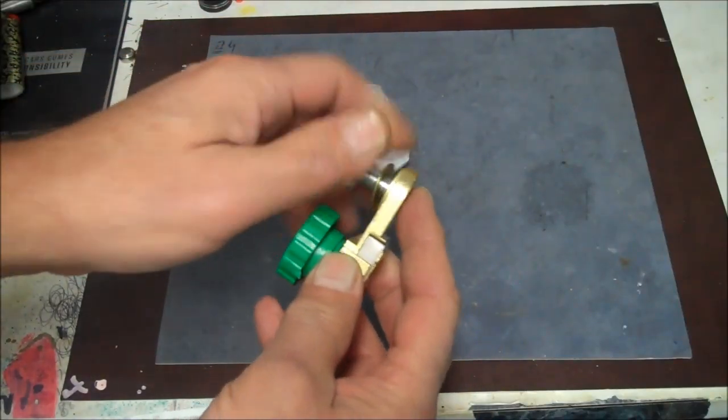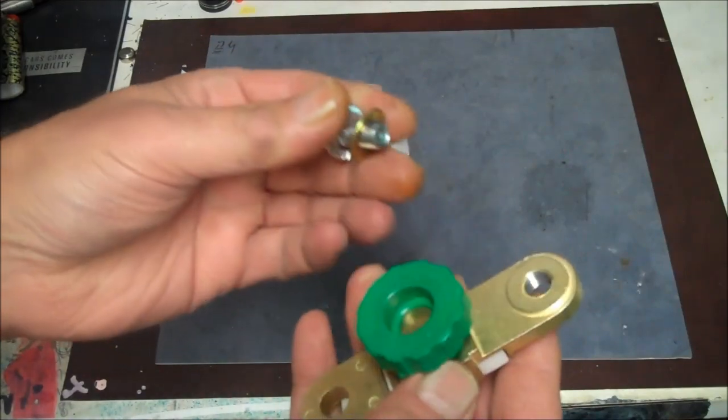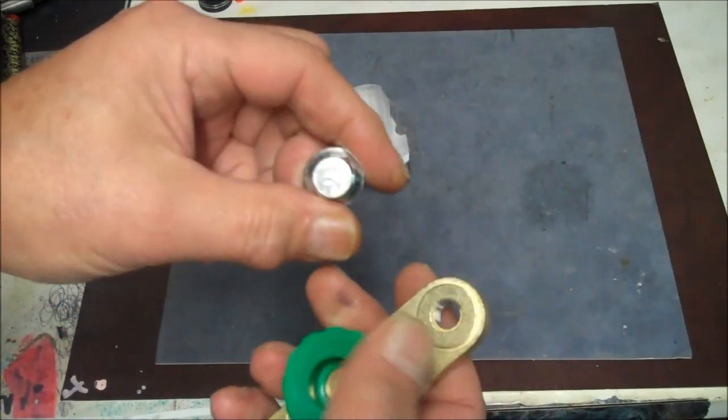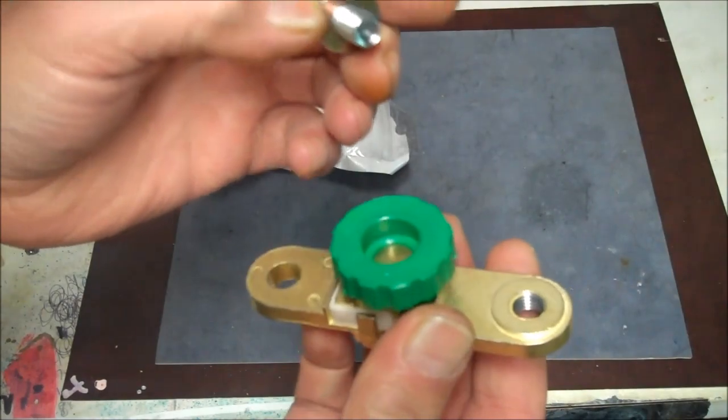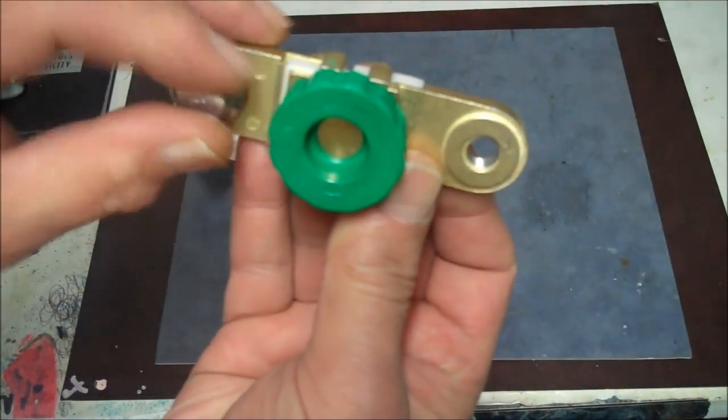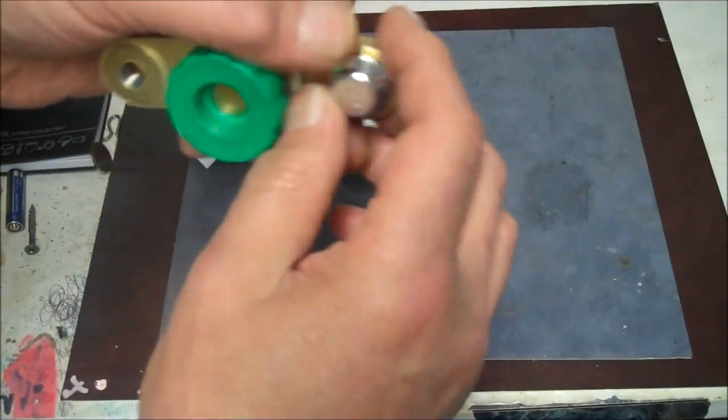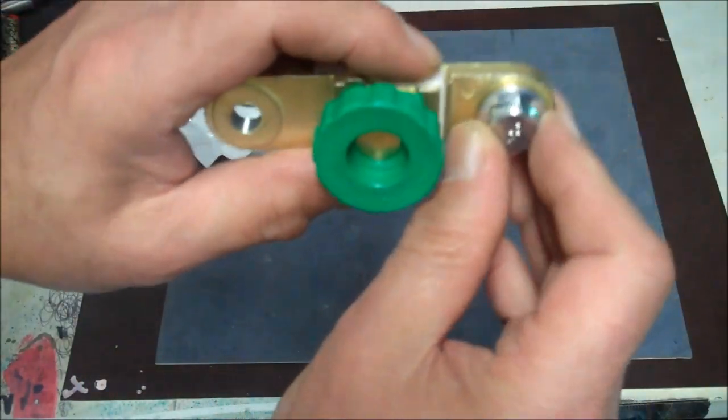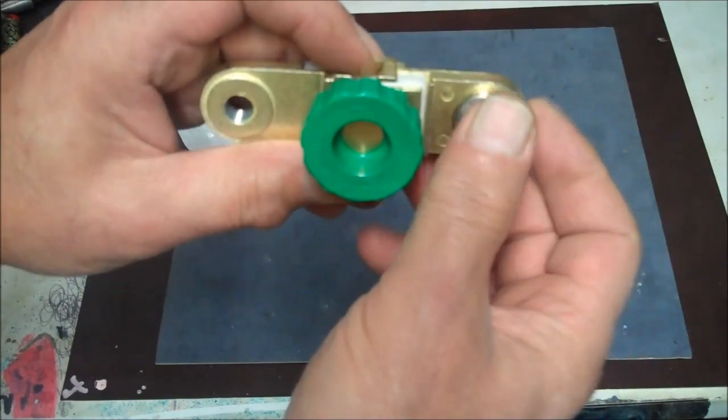So anyway, this is going to now screw into the battery. So you're going to screw this part into the battery. Mine is going to be like this because I'm going to do it on the negative side. So I'm going to screw this into the battery.